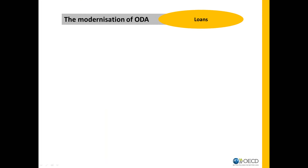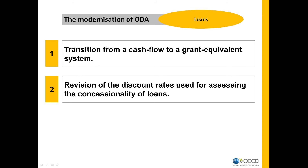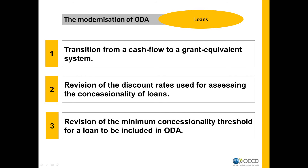In a nutshell, this consists of the transition from cash flow to a grant equivalent system, the revision of the discount rate used for assessing the concessionality of loans, and the revision of the minimum concessionality threshold for a loan to be included in ODA.